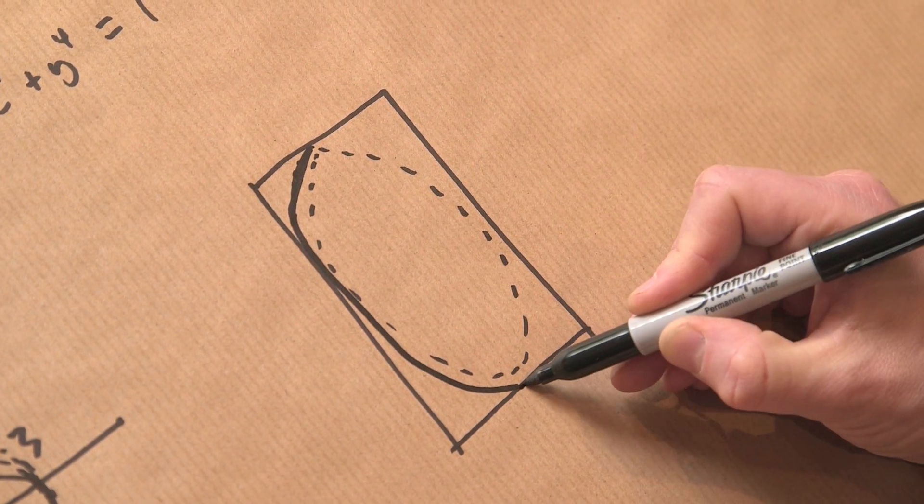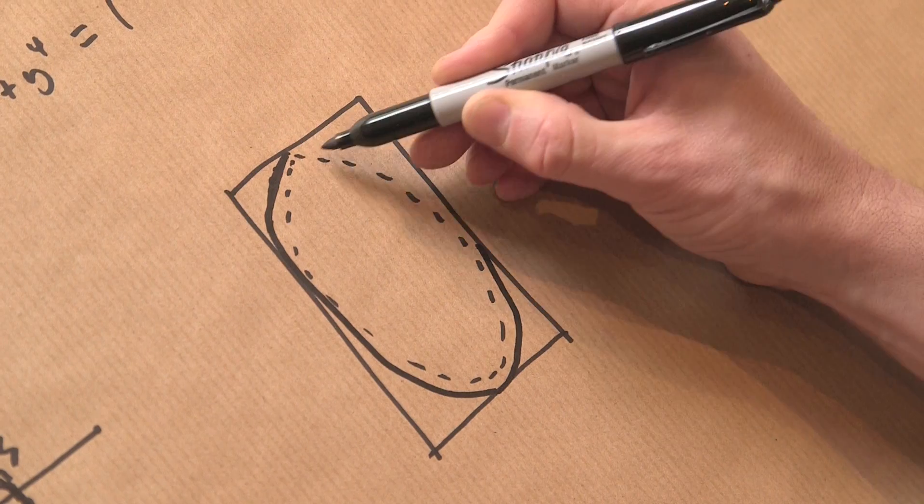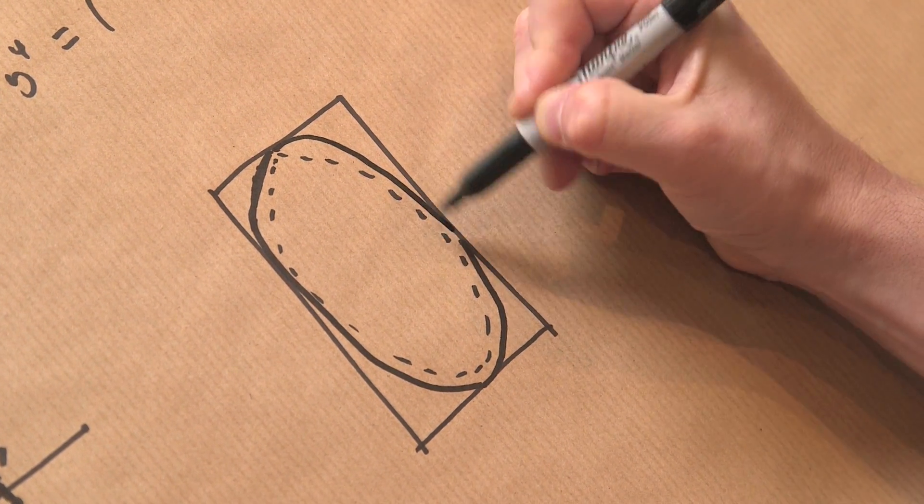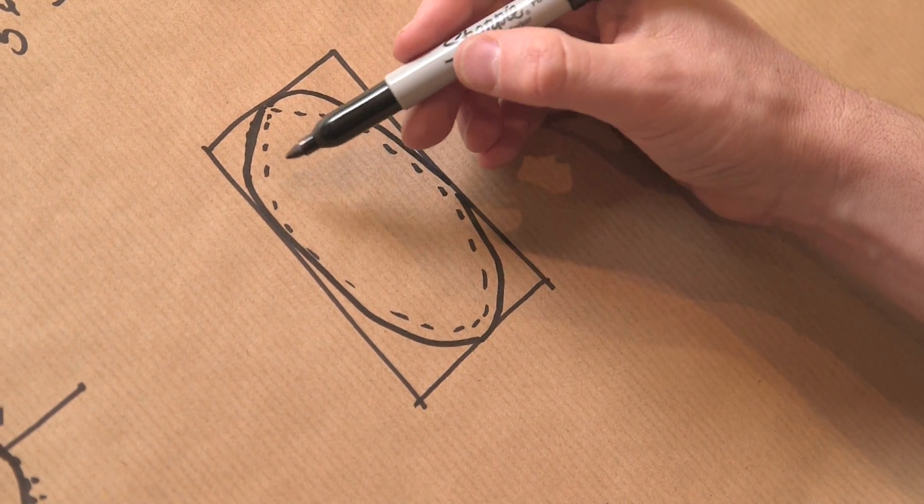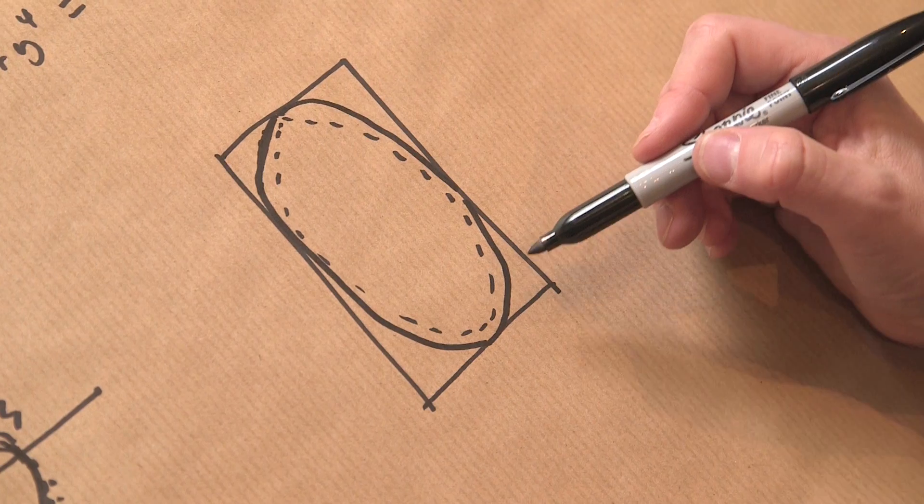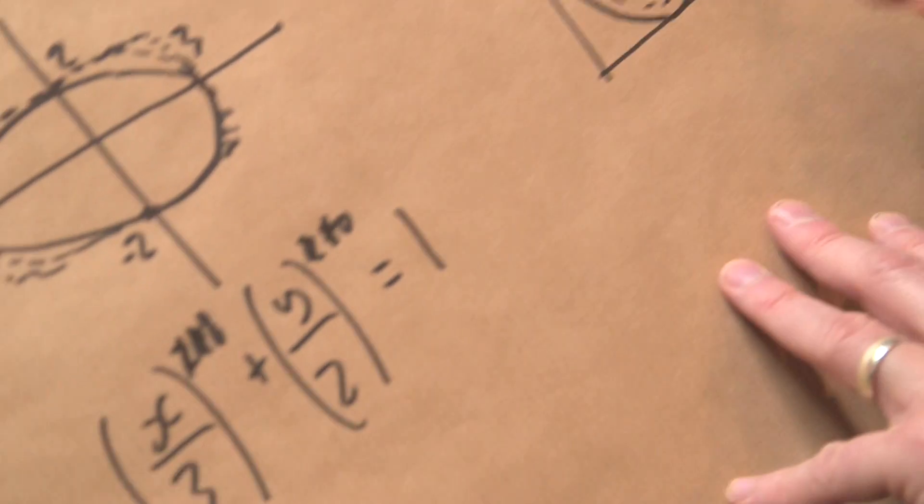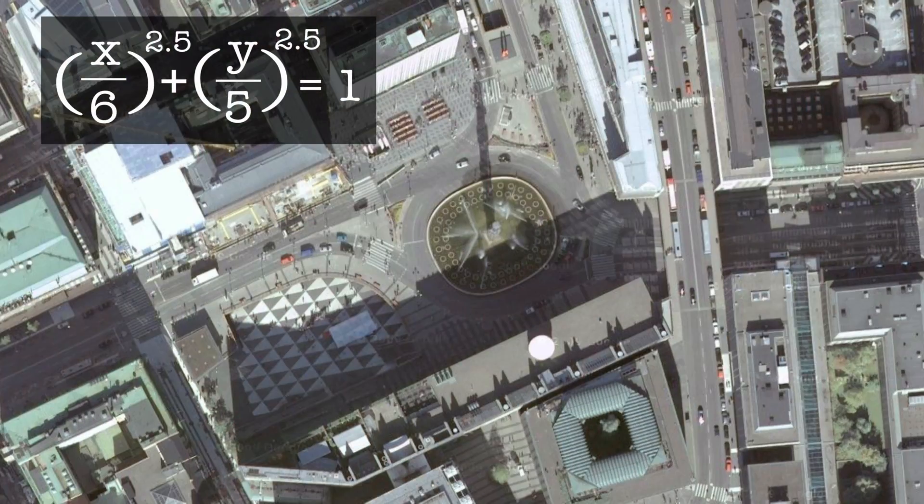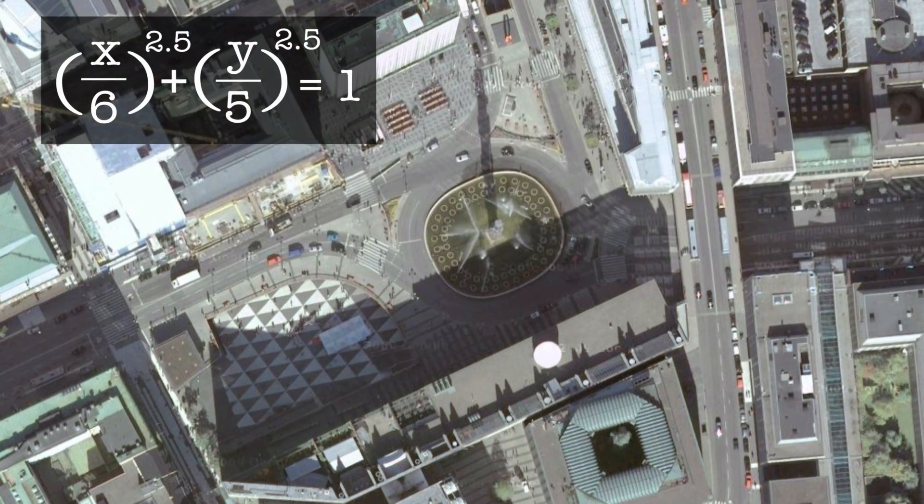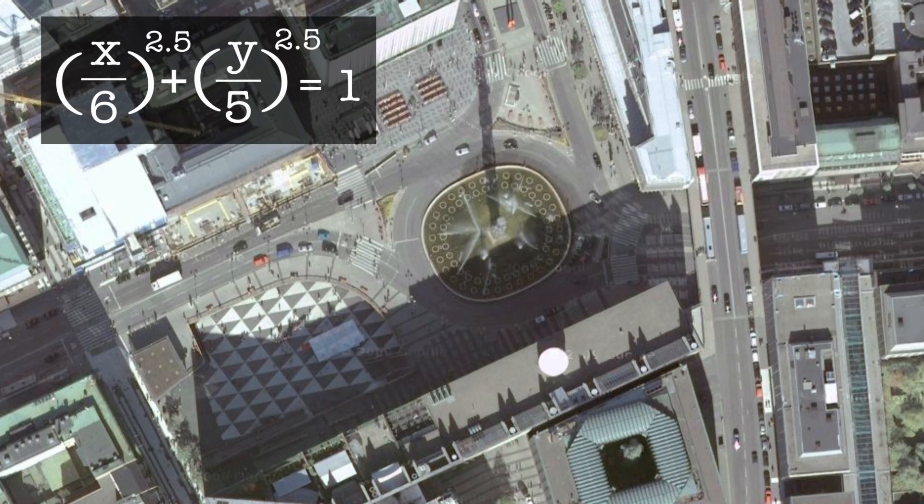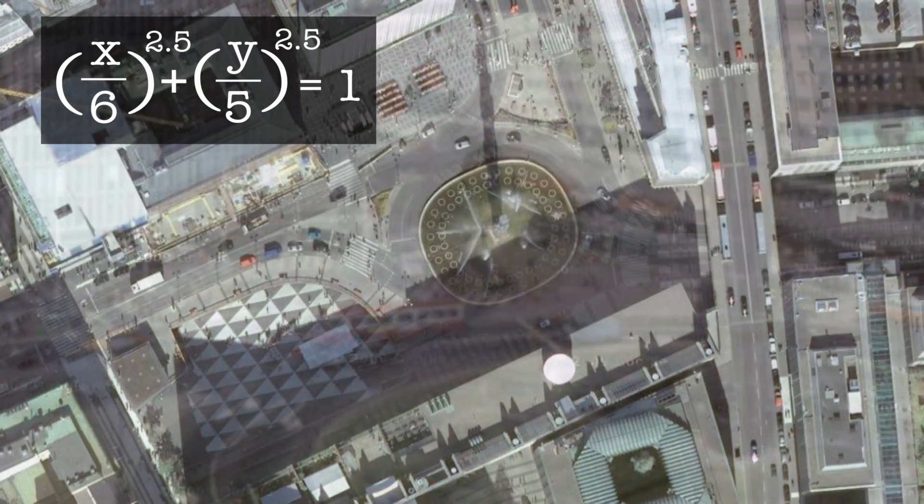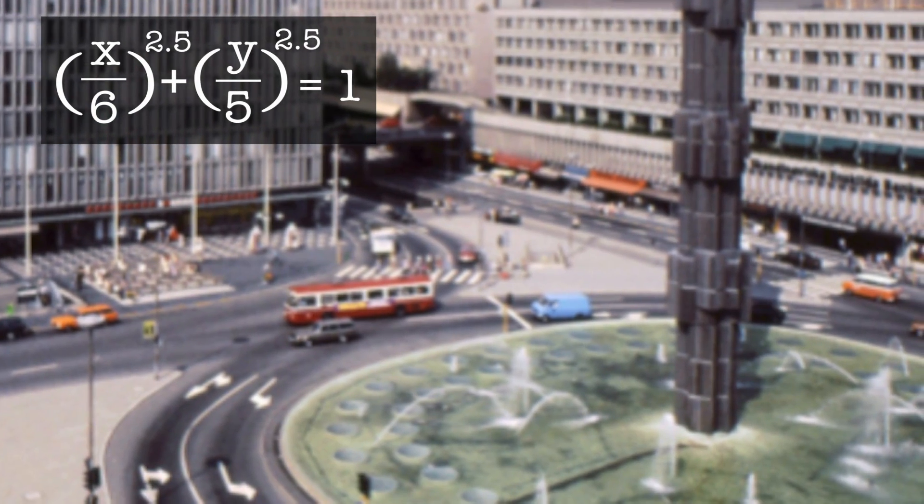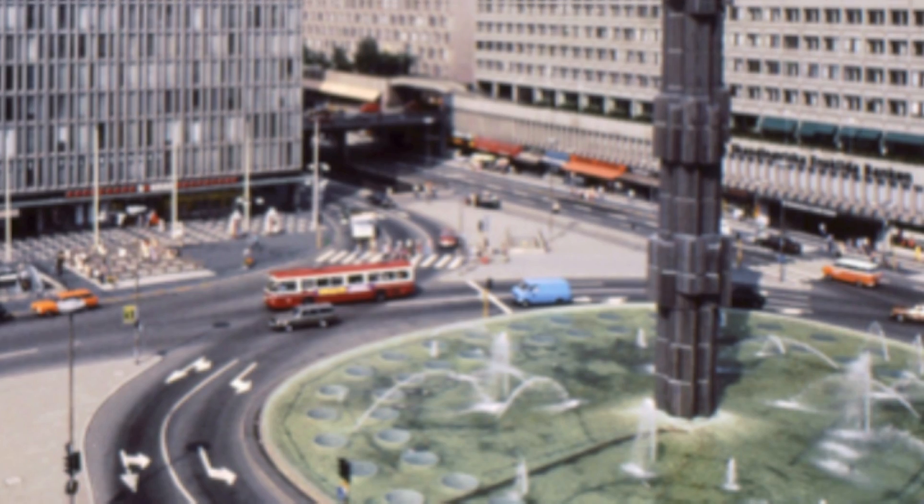So the super ellipse is halfway in between the actual ellipse and the rectangle. And the exponent that he felt was both the most aesthetic and the most practical was 2.5. And it is true that this was then implemented in Sergels Torg, which has got this kind of horrible obelisk thing in the center. And at the moment it's right in the center of Stockholm.